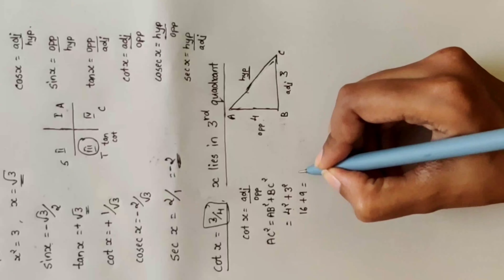Now, x lies in the third quadrant. Using 'After School To College' — in the third quadrant, tan and cot are positive, so tan is positive and cot is positive (as given). Sin, cos, cosec, and sec are all negative because x lies in the third quadrant.